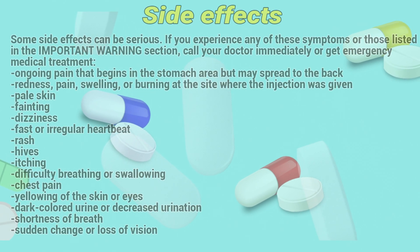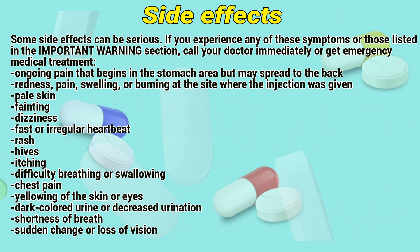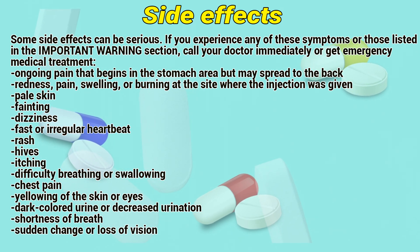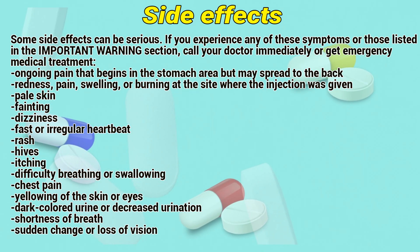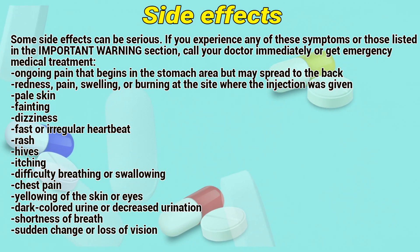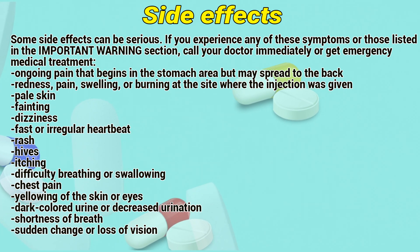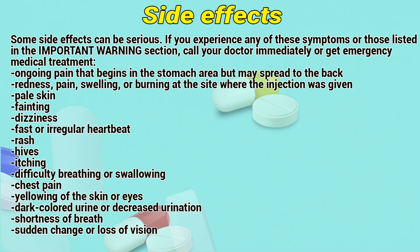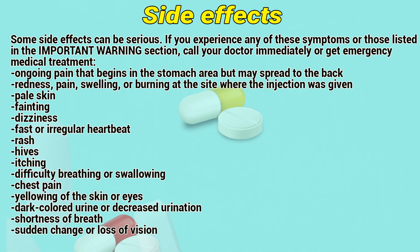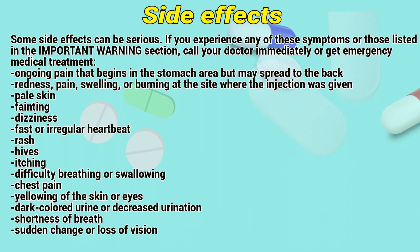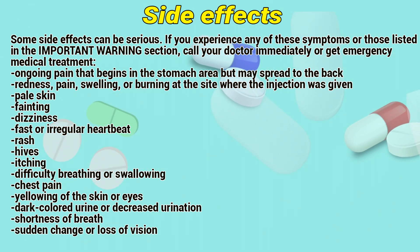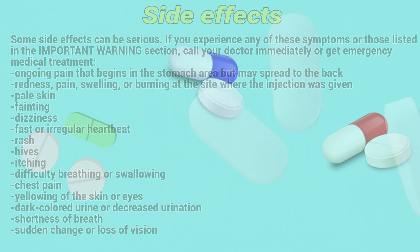Some side effects can be serious. If you experience any of these symptoms or those listed in the important warning section, call your doctor immediately and get emergency medical treatment: ongoing pain that begins in the stomach area but may spread to the back; redness, pain, swelling, or burning at the site where the injection was given; pale skin, fainting, dizziness, fast or irregular heartbeat, rash, hives, itching, difficulty breathing or swallowing, chest pain, yellowing of the skin or eyes, dark-colored urine or decreased urination, shortness of breath, sudden change or loss of vision, seizures, convulsions, numbness, burning or tingling in the hands, arms, feet, or legs. Cytarabine may cause other side effects. Call your doctor if you have any unusual problems while taking this medication.